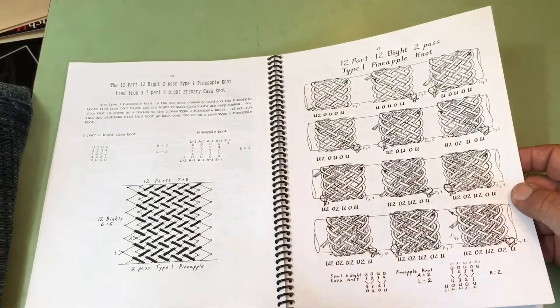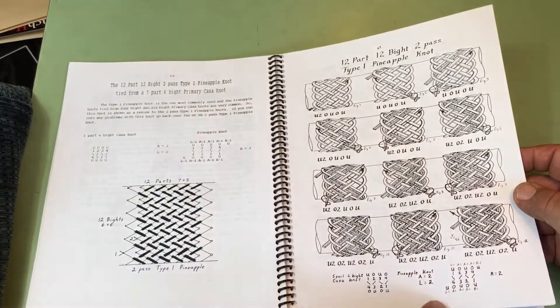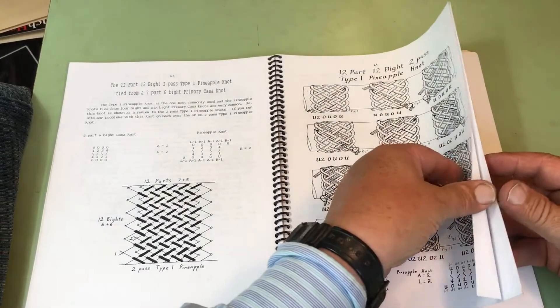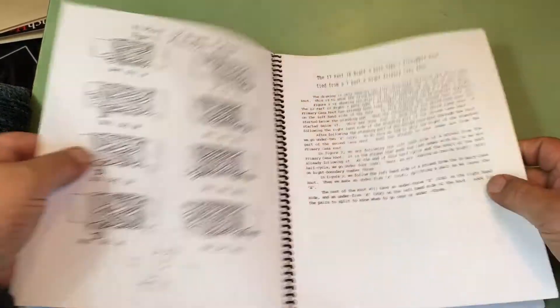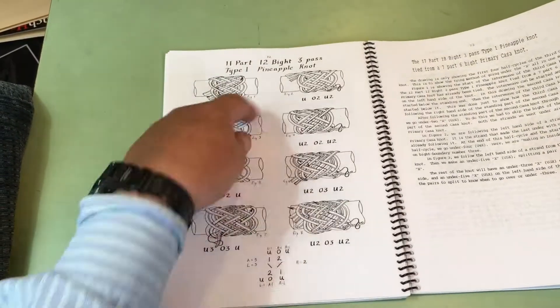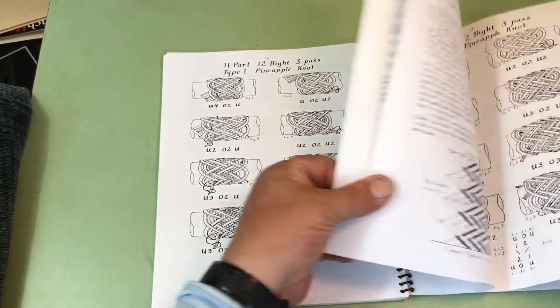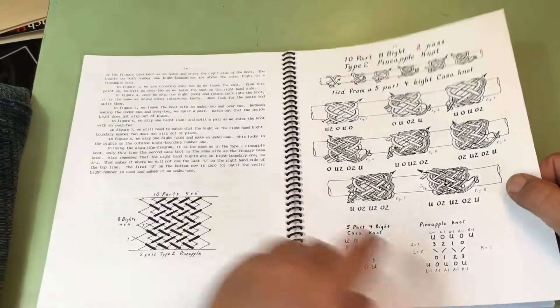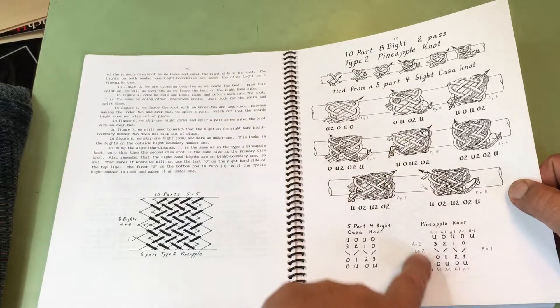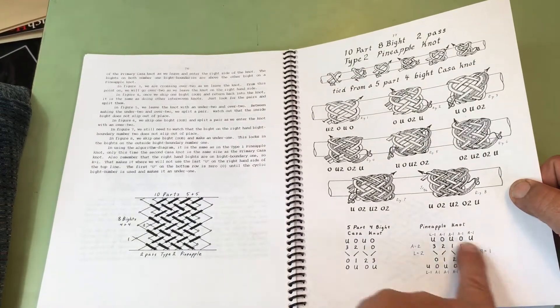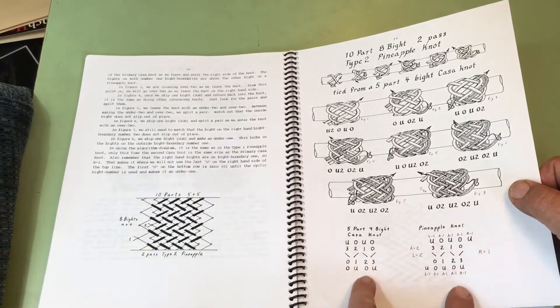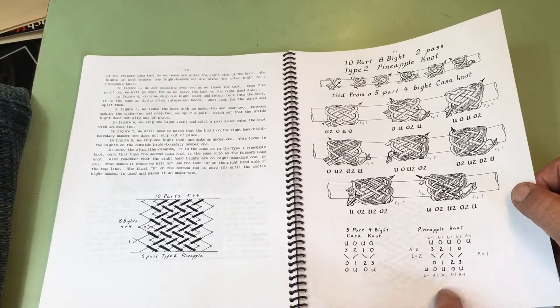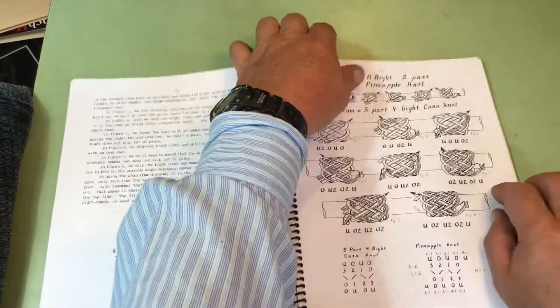Here's doing it with a type one, two-pass. Here it is for a three-pass. So, this is a type two pineapple. So, these are, the algorithm diagram is set up at the bottom of the pictures. So,